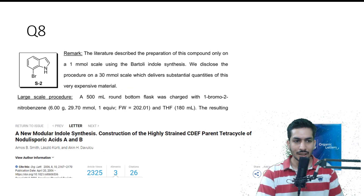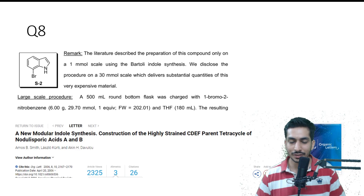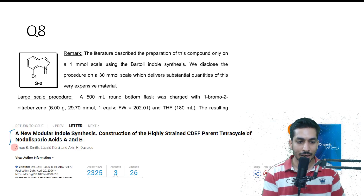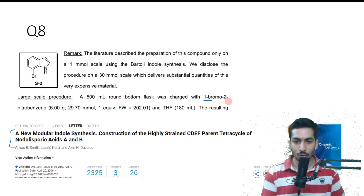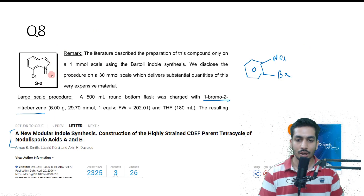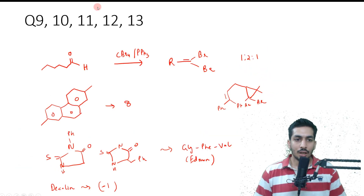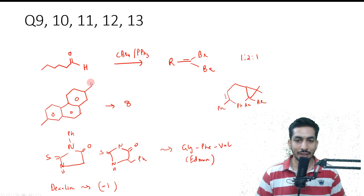This was a simple reaction — the Bartoli indole synthesis. Indole syntheses including Fisher indole synthesis and others are asked very frequently. The reference article is from Organic Letters, showing how to synthesize this molecule. One of the options was 1-bromo-2-nitrobenzene, and this is how you end up synthesizing this molecule by adding your Grignard reagent. This molecule was given as the starting material.